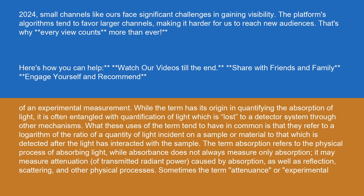The term is used in many technical areas to quantify the results of an experimental measurement. While the term has its origin in quantifying the absorption of light, it is often entangled with quantification of light which is lost to a detector system through other mechanisms. What these uses tend to have in common is that they refer to a logarithm of the ratio of light incident on a sample to that detected after interaction. The term absorption refers to the physical process of absorbing light, while absorbance does not always measure only absorption — it may also measure attenuation caused by reflection, scattering, and other physical processes.